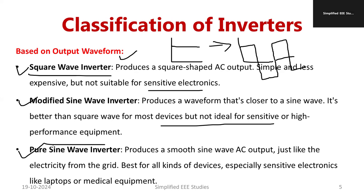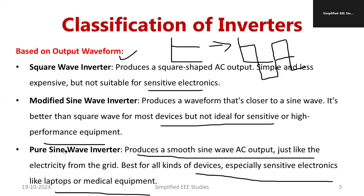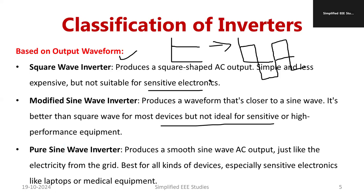Our requirement is a pure sine wave inverter. Over 90 percent of devices operate on pure sine wave, so we require a pure sine wave inverter. You can use this type of inverter for standalone or grid-connected applications. It is best suited for all devices including medical equipment, electronic devices, and all sensitive hardware. This is the classification according to output waveforms.